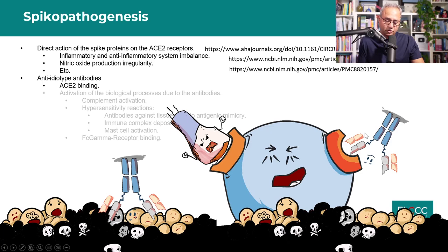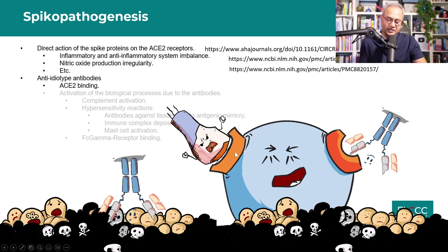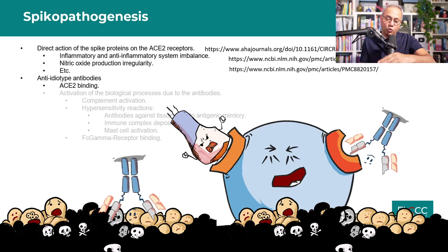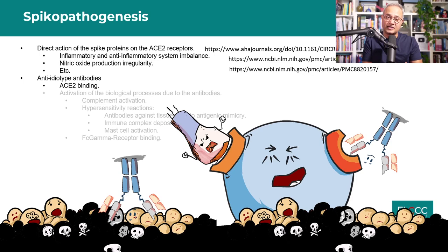Here is something really important: this cell — specifically when it is an endothelial cell — has ACE2 receptors on it. The orange structures represent ACE2 receptors. On one end, spike protein is attached; on the other end, the anti-idiotype antibody is attached. Both behave similarly with ACE2 and cause dysregulation. We will discuss what kind of dysregulation occurs inside the cell.